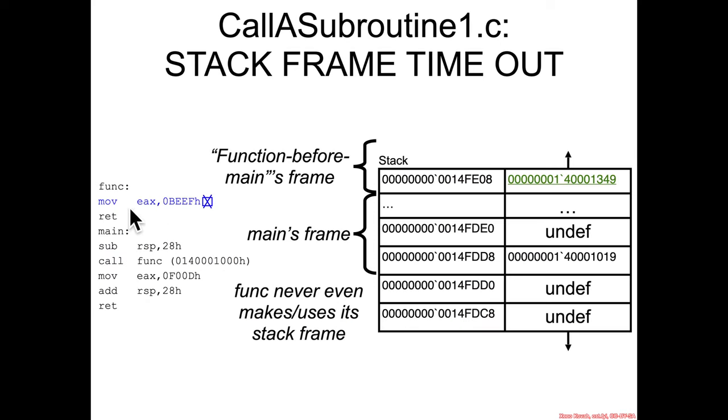So just pausing here briefly, we are having executed this assembly line. We've put hex beef into EAX, RAX. And so what is the state of the stack right now? Well, we said that the beginning of the stack was this return address back to whatever function was executing before main. So this is part of the frame of the function that executed before main.